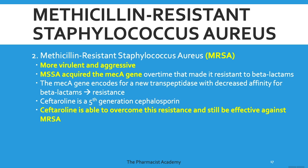Methicillin-resistant Staphylococcus aureus, or MRSA, is more virulent and more aggressive. MRSA acquired the meca gene, and this changed everything — the meca gene encoded for a new transpeptidase that has decreased affinity for beta-lactams. When beta-lactams bind to this new transpeptidase, the interaction is very weak, so the beta-lactam is unable to do its job, and this is what leads to the resistance.